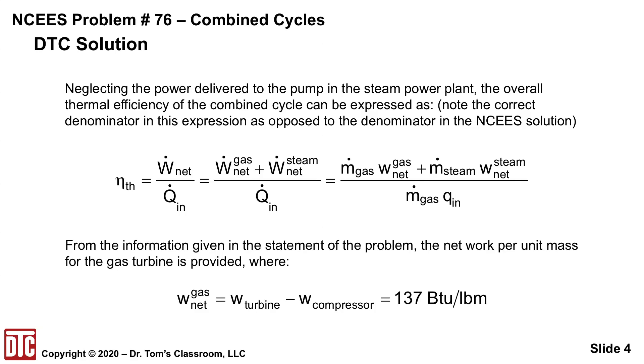Now from the information given in the statement of the problem, the net work per unit mass for the turbine is provided as 137 BTUs per pound mass. That's part of the statement of the problem.